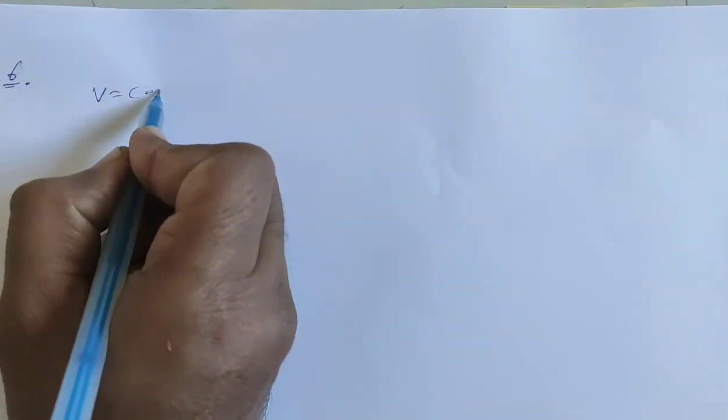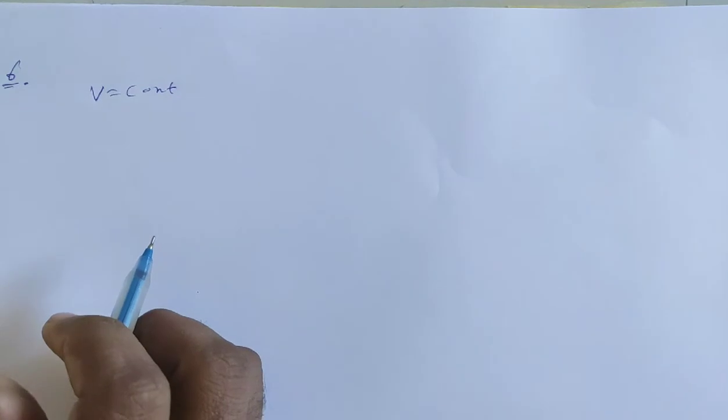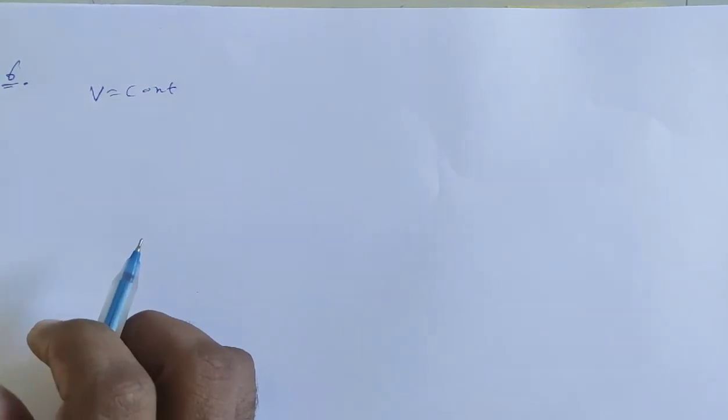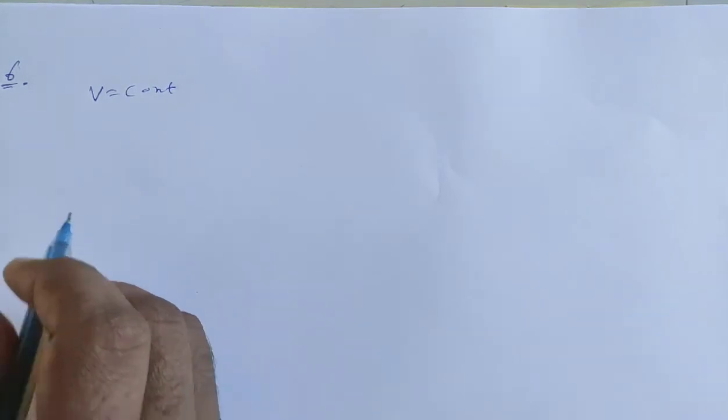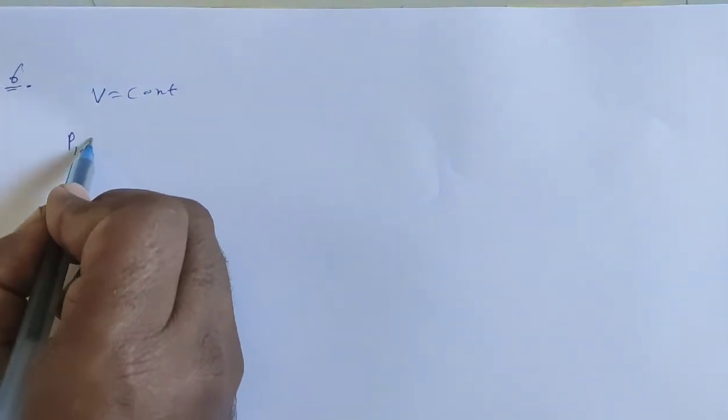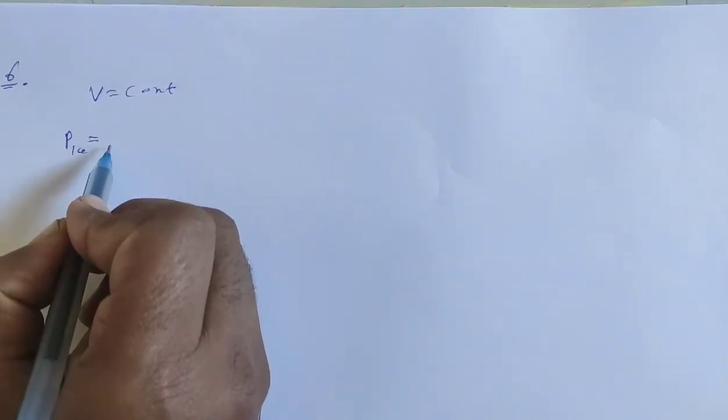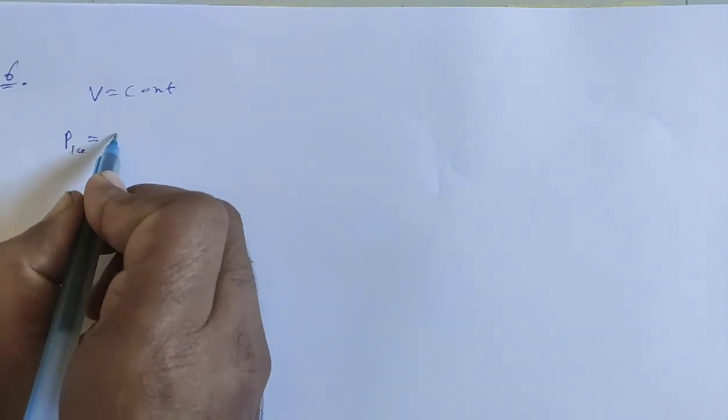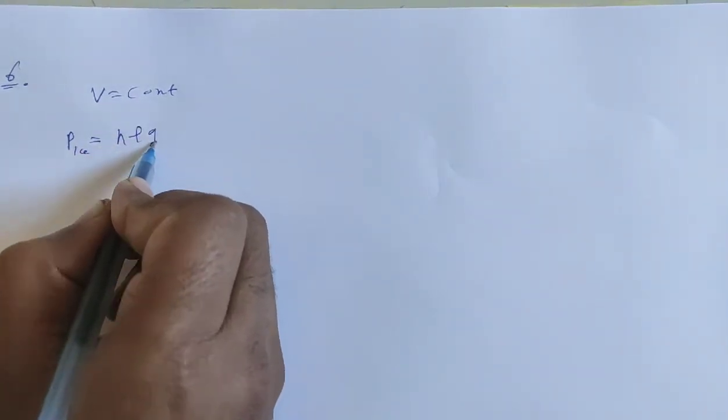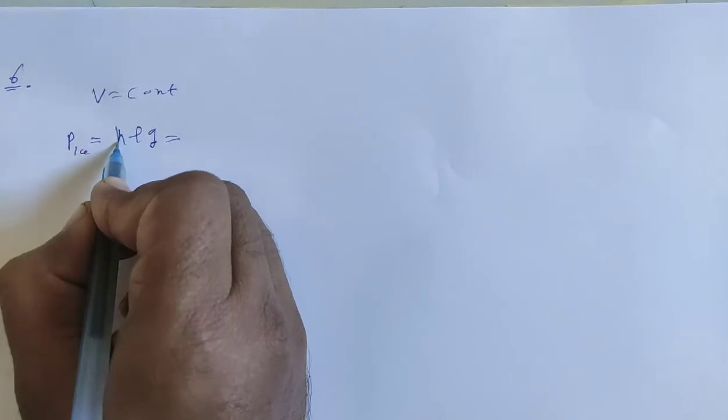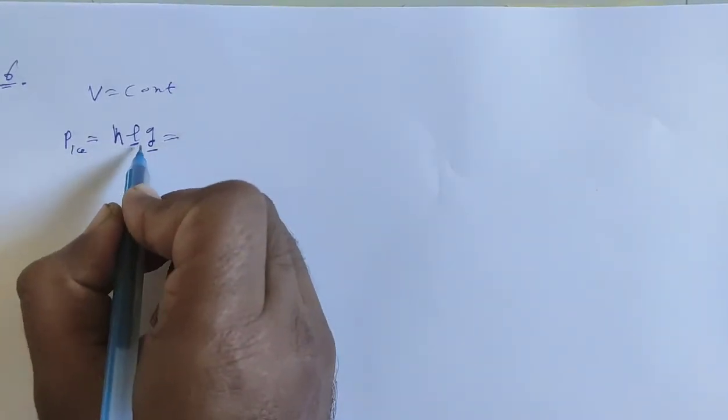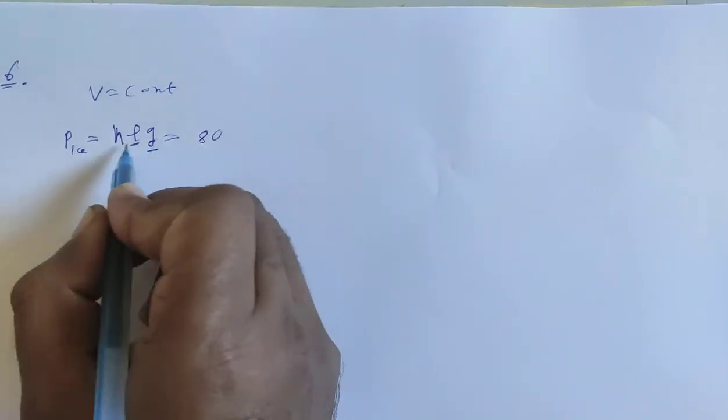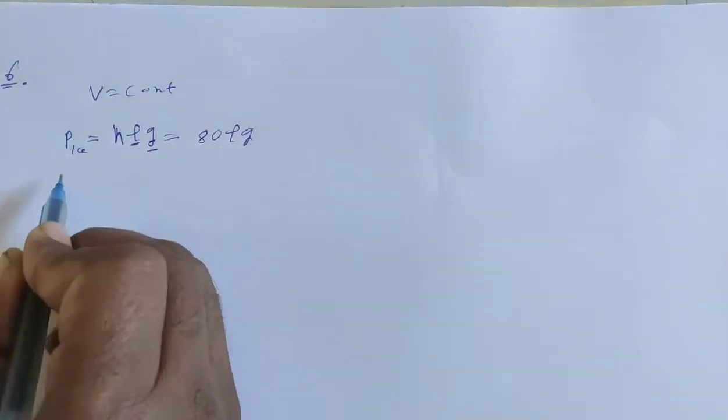Okay, so first of all we have constant volume, so V is equal to constant. Then you have to note the pressures at each point: ice point, steam point, and wax point. Ice point pressure is 80 centimeter of mercury, or pressure is h rho g. In mercury we have h rho g pressure, where h is mercury height, rho is density of mercury, and g is acceleration due to gravity. So here h is 80 centimeters, and this is the pressure at ice point.